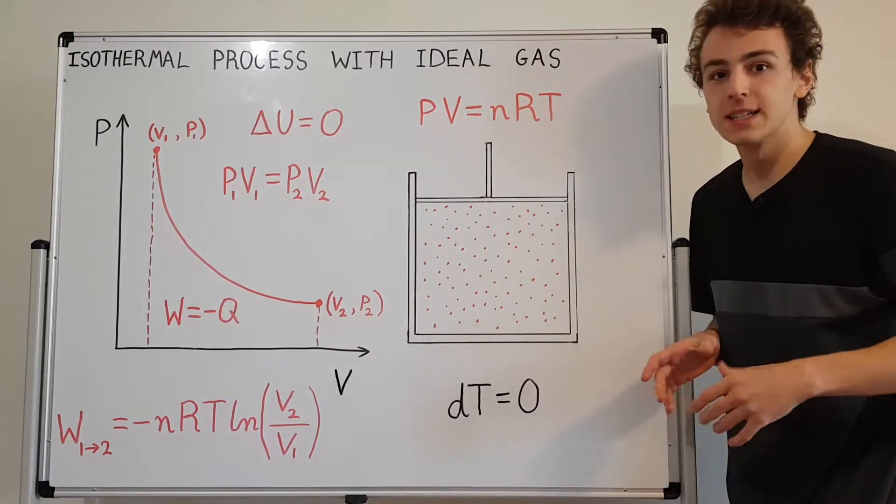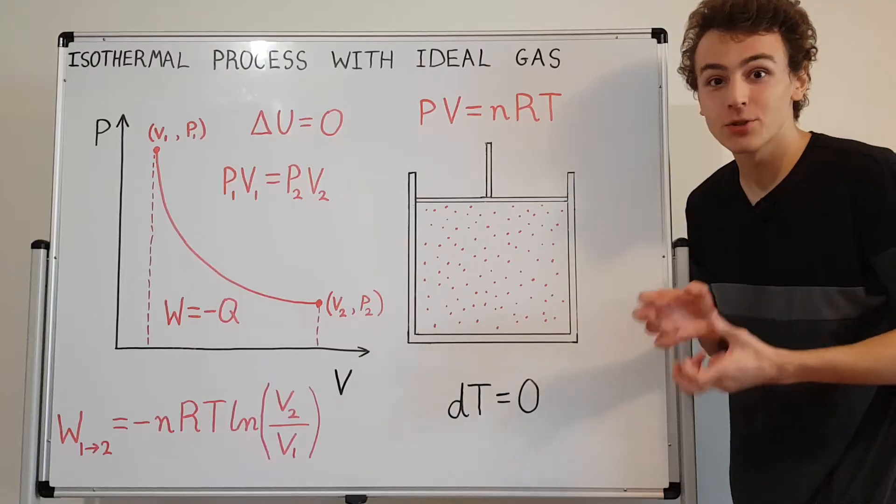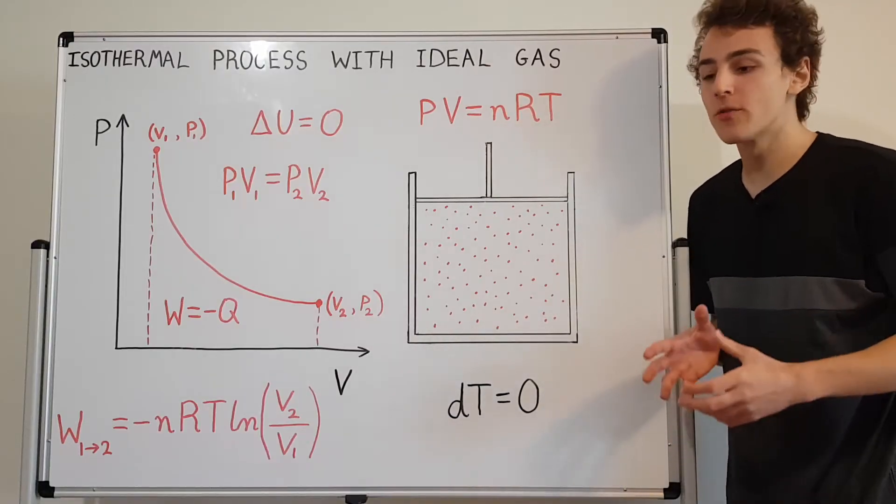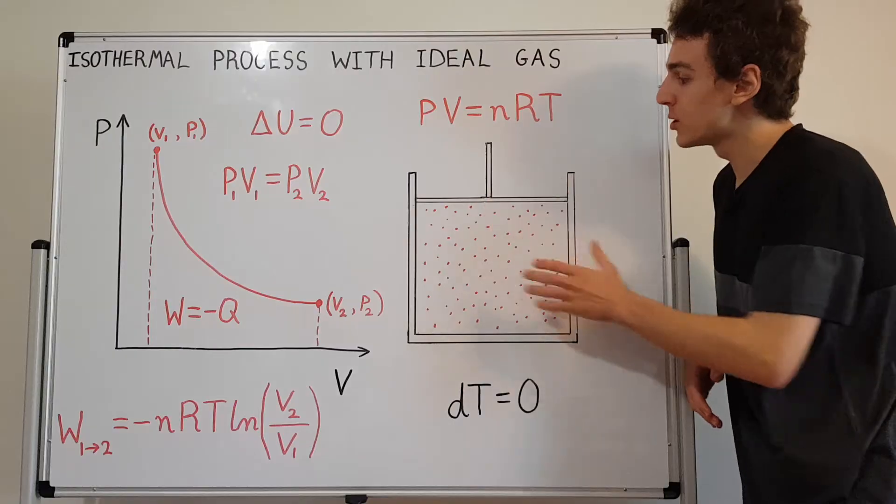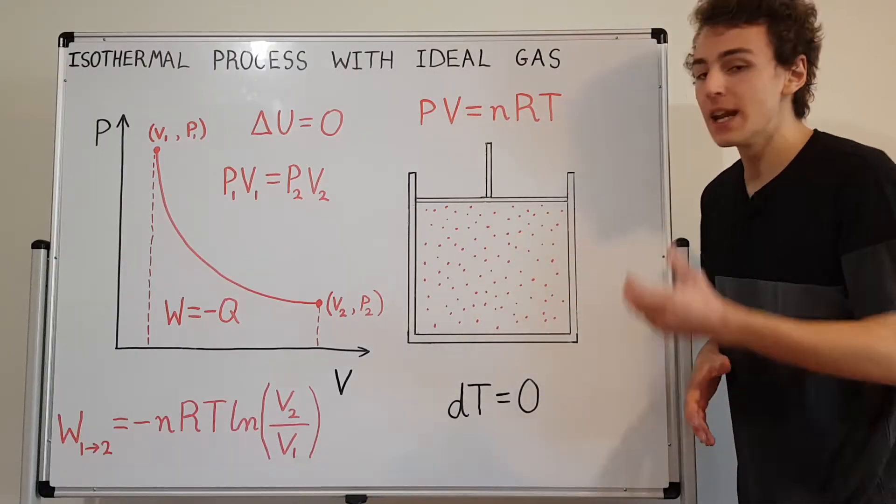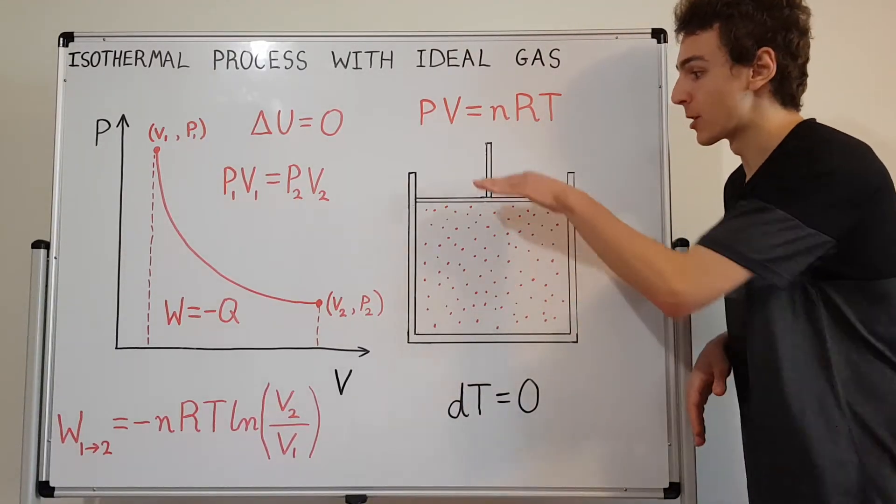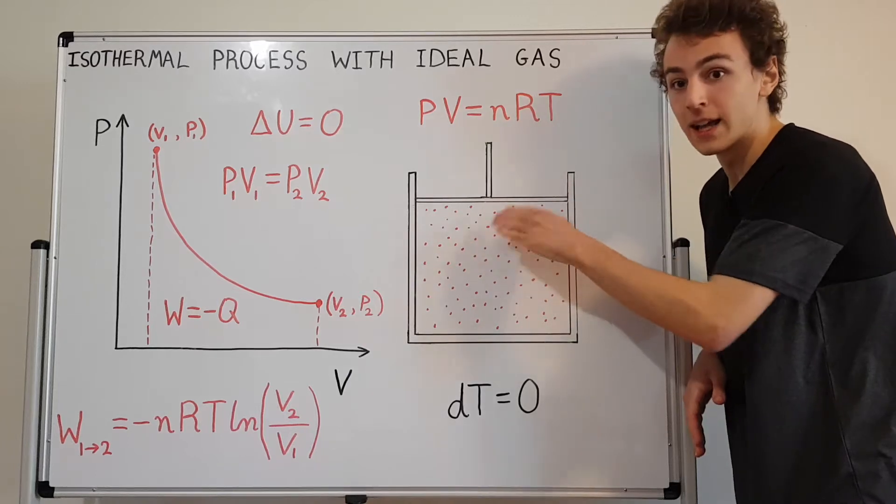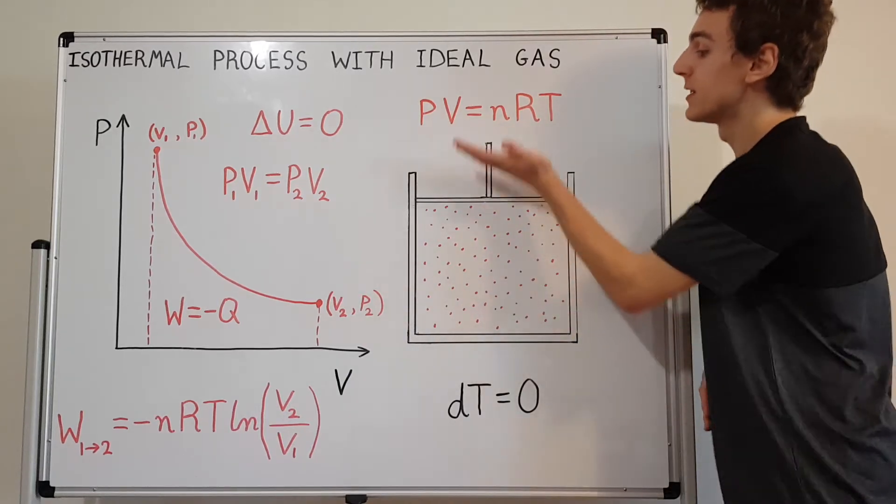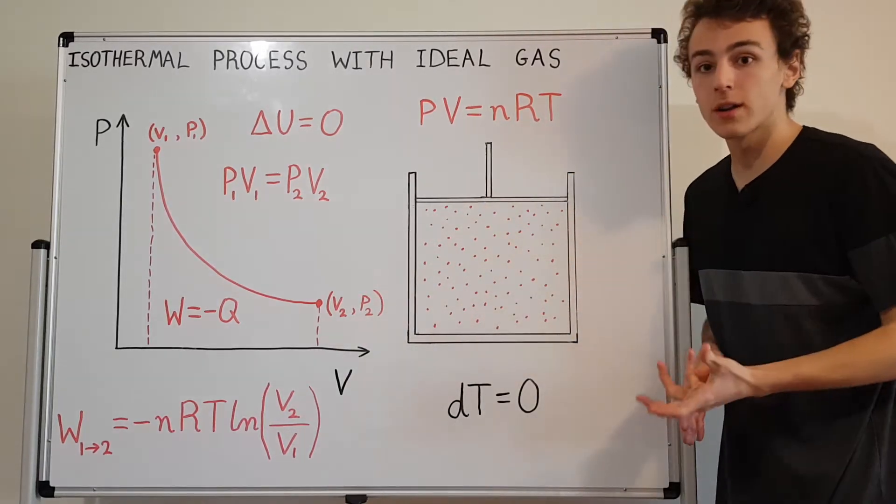So heat energy is a kind of noisy energy at a microscopic scale, whereas work, that's more of a macroscopic energy. And the type of work we're doing in this system is compression expansion work. So compression is going to be pushing down, expansion is going to be lifting this piston up. And that's the type of work we're going to be looking at.